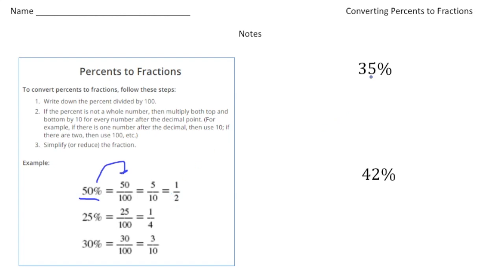So let's try a couple of these together here. Step number one is you write down the percent over 100. So 35 over 100. And now there's no decimals in the numerator, right? So we're all set. But I can reduce this because five goes into 35 seven times, and five goes into 100 twenty times. So it's seven twentieths.